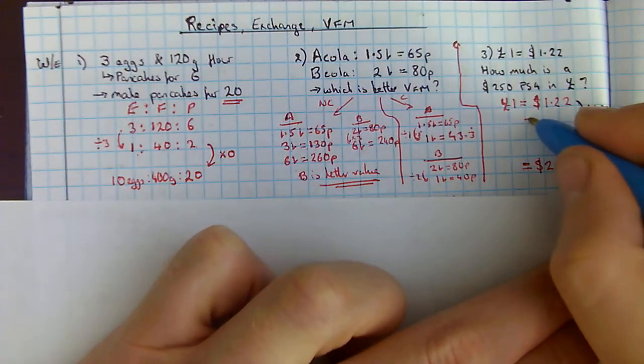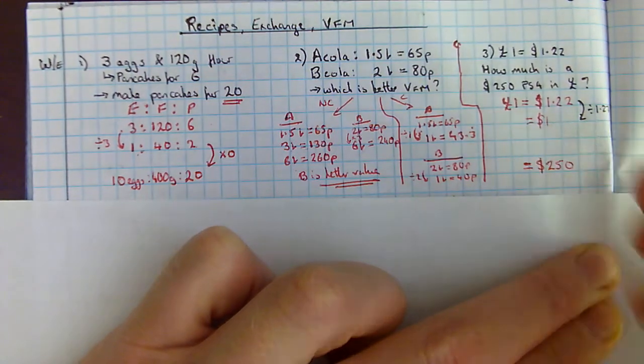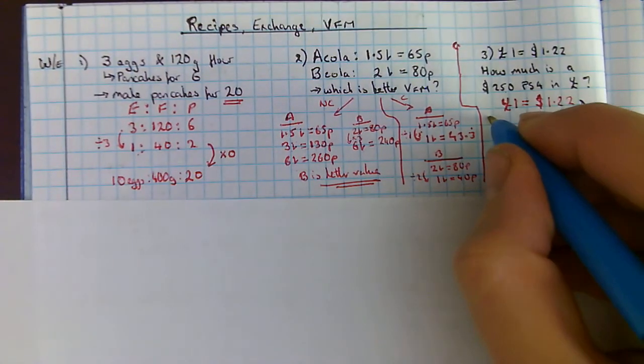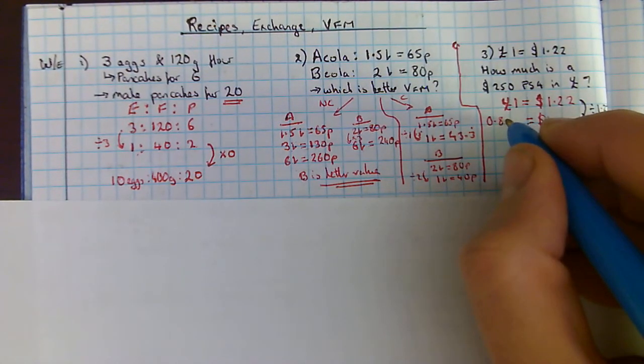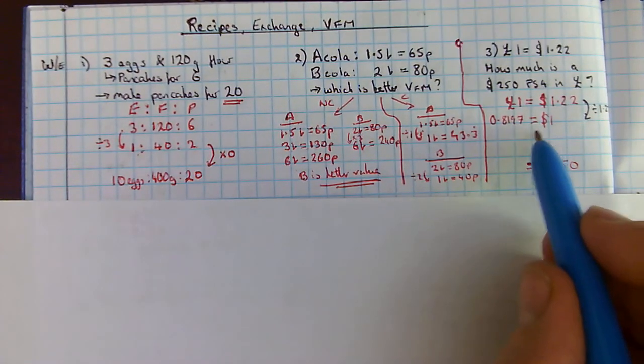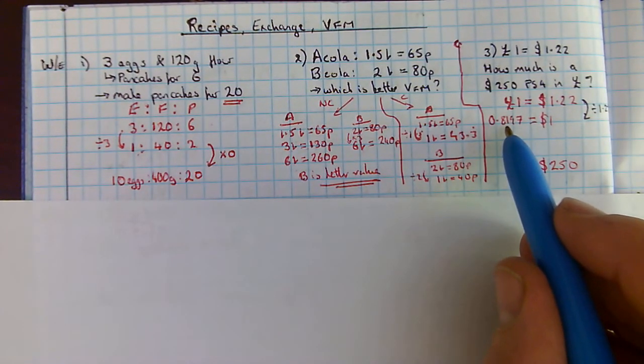1 divided by 1.22, I'm going to need to use my calculator for. It gives me 0.8197. So, $1 is roughly the same as 82 pence.